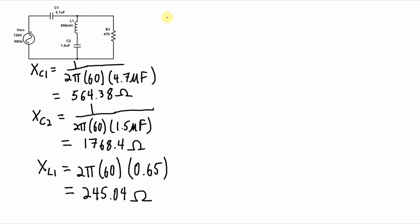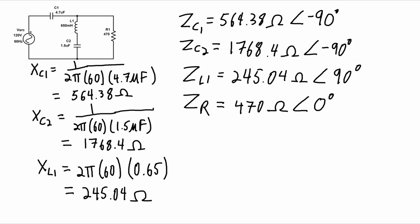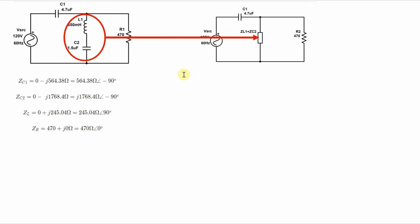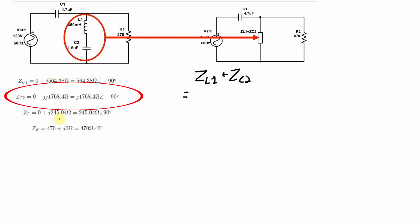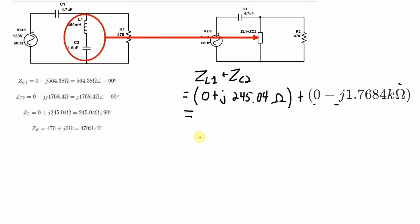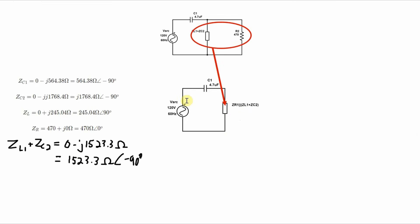Now I can take all of these reactances and write them out as impedances, including the phase shifts that the components will introduce. For the first equivalent circuit, I'm combining the inductor and capacitor 2 together. So ZL1 plus ZC2 equals j245.04 ohms minus j1768.4 ohms. The effect of adding the impedance of the inductor plus the impedance of the capacitor gives us something that looks like a capacitor, because it's introducing a phase angle of minus 90 degrees — it's got a negative j component.